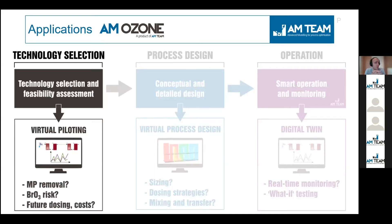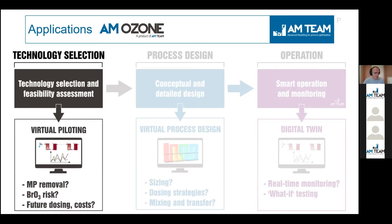I already briefly explained what AMAZON is and how it works in a nutshell. Now, where can it help you? In this webinar, we have technology vendors, designers, and people from utilities present — process engineers, for example. AMAZON can help in removing uncertainty in an ozonation process across the whole cycle: from feasibility study, through design, to the operation of such a plant.